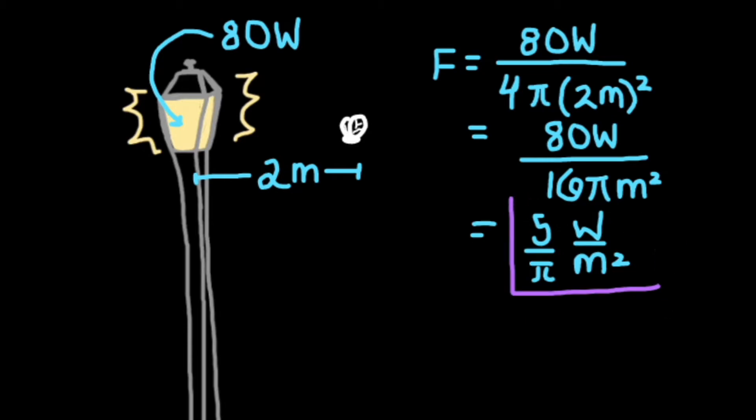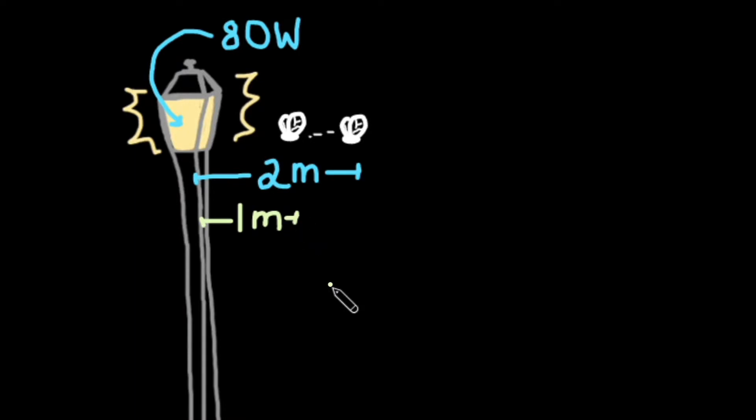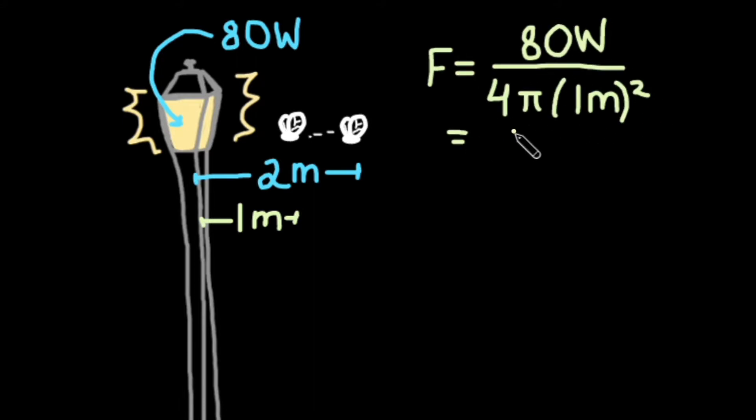This flux indicates the level of brightness the fly will experience. If the fly moves in closer to the light by a meter, will the flux be greater or smaller than before? And by how much? The new flux will be 80 watts divided by 4 times pi times 1 meter squared, or 20 divided by pi watts per square meter.